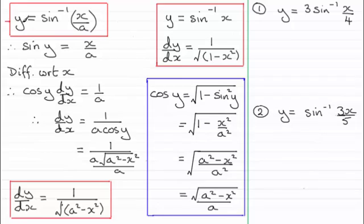So therefore if we've got this equation here y equals the inverse sine or arc sine x over a, then we end up with dy by dx equaling 1 over the root of a squared minus x squared.